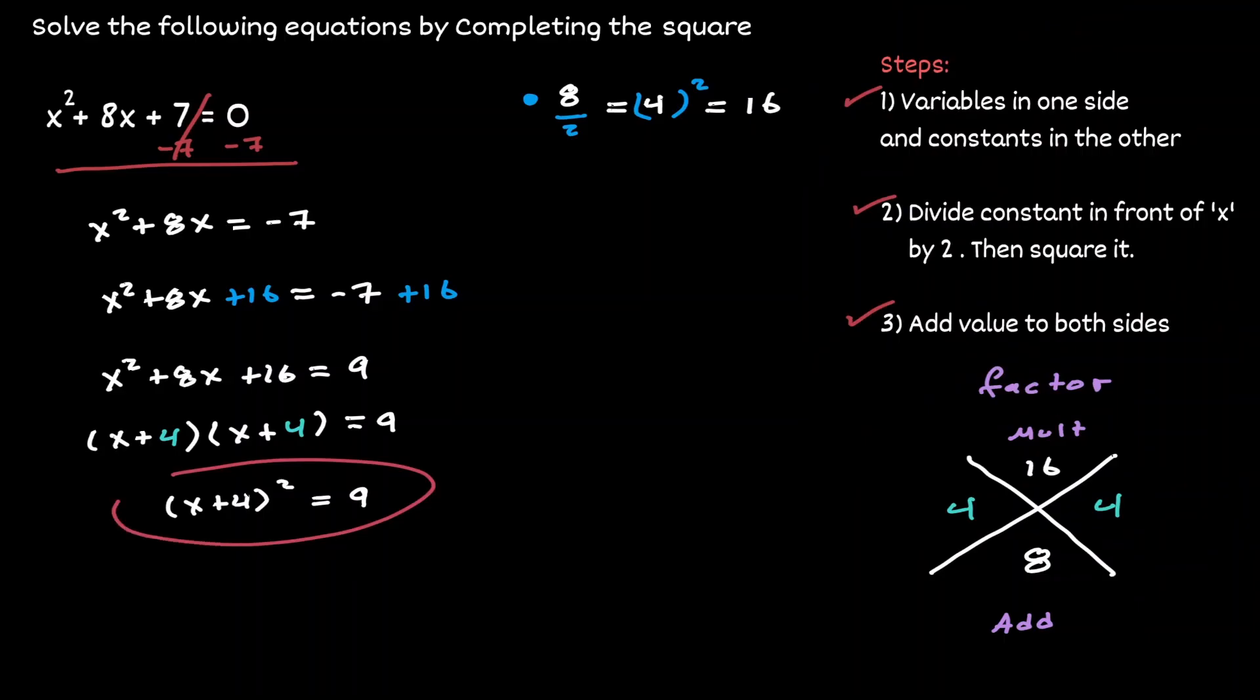Which is exactly what we wanted to get. This is the objective of completing the square. We got our polynomial and we were able to write it down into a factor raised to the second exponent. And now that we have it in this form, it is easier to solve for x.